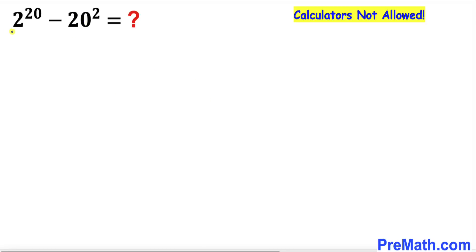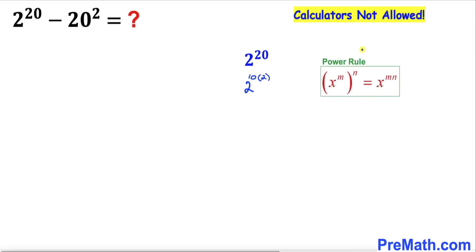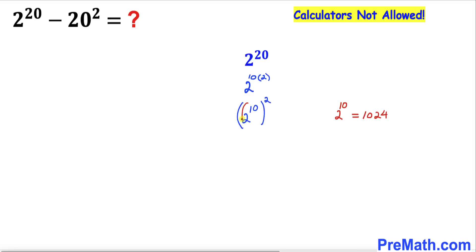The first thing we are going to do is focus on 2 power 20. Here I have copied it down. Let's focus on its exponent: 20 could be written as 10 times 2. Now let's recall the power rule — according to this rule, this could be written as 2 power 10, whole power 2.